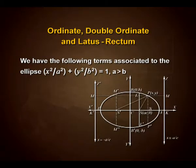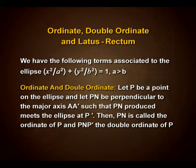We have the following terms associated to the ellipse x²/a² + y²/b² = 1, where a is greater than b. Ordinate and double ordinate: let P be a point on the ellipse and let PN be perpendicular to the major axis AA', such that PN produced meets the ellipse at P'. Then PN is called the ordinate of P and PN P' the double ordinate of P.